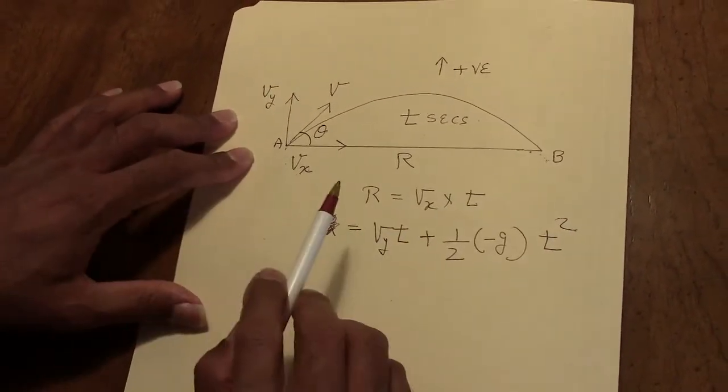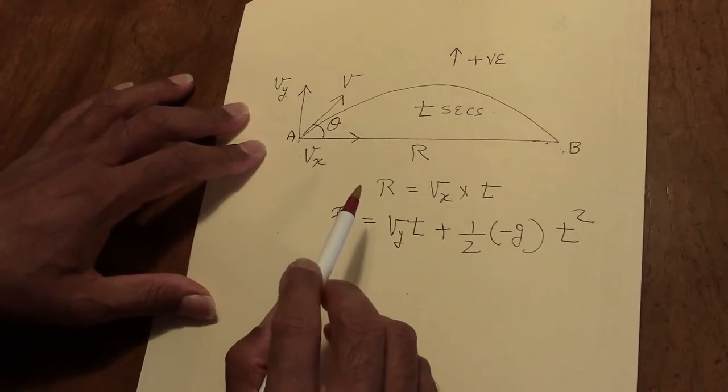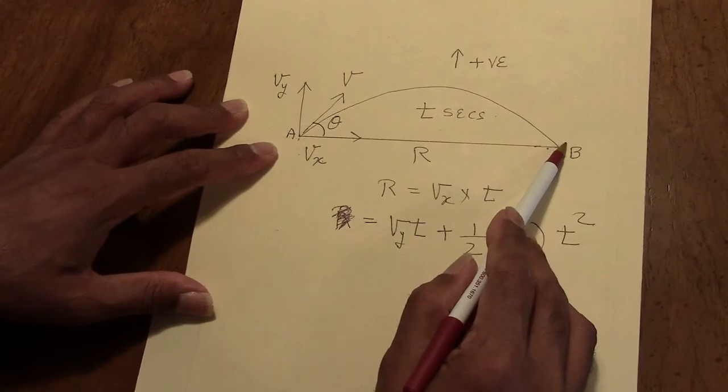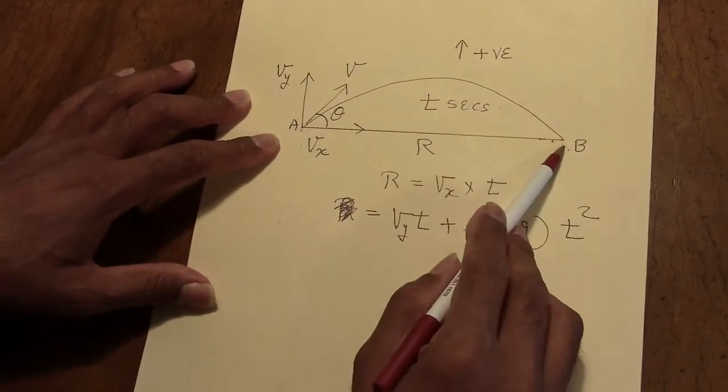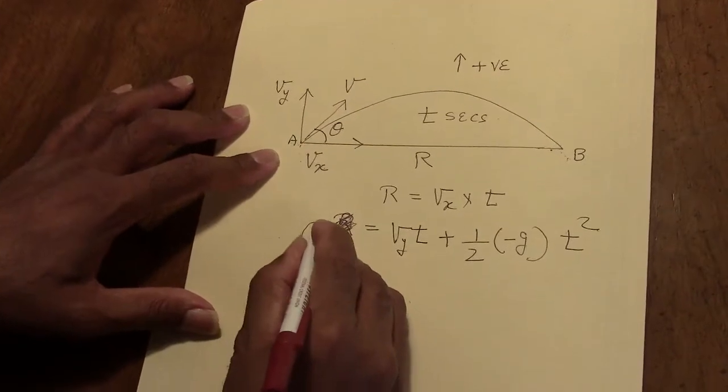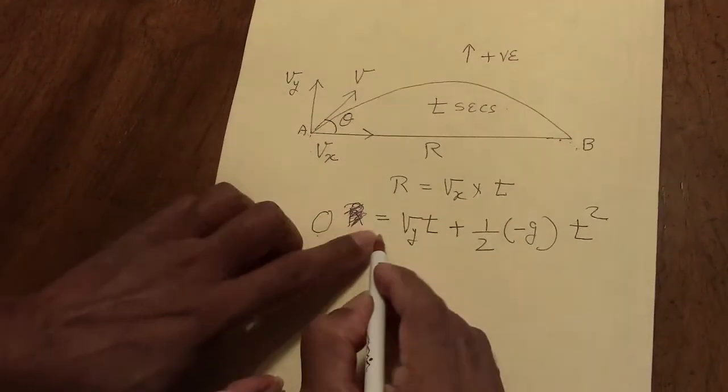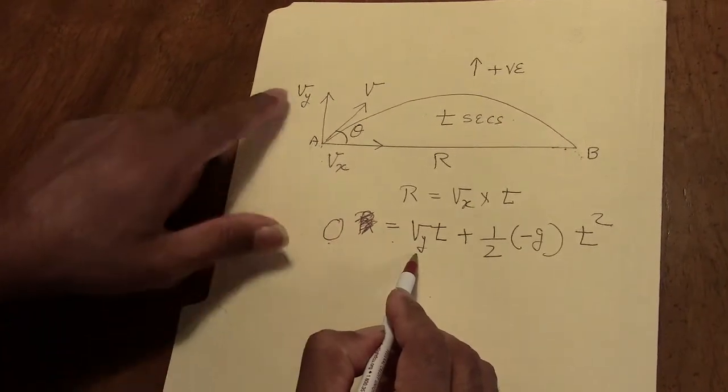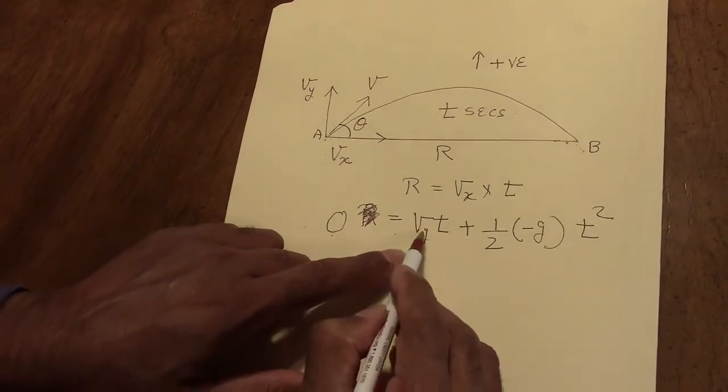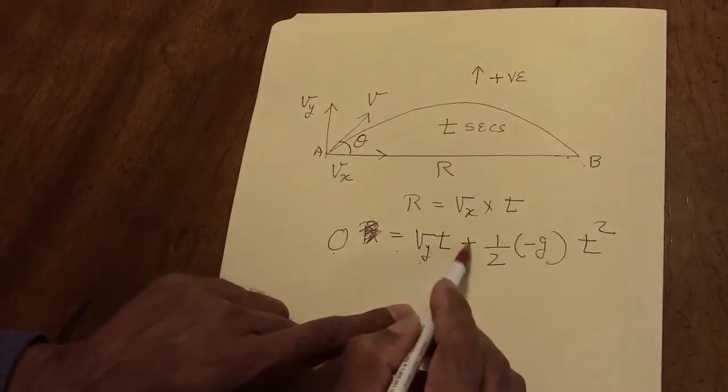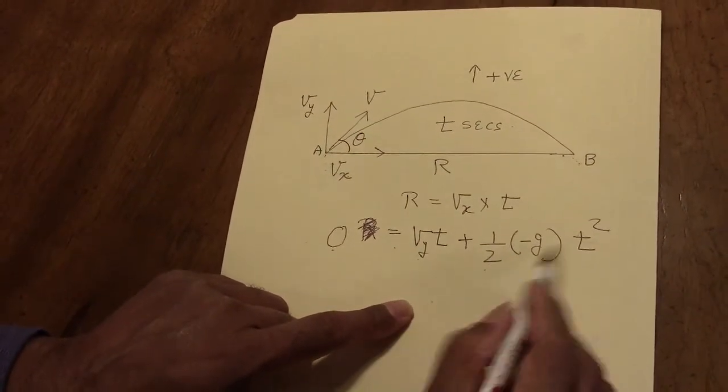Now let's consider the motion in the vertical direction. At B, the displacement is zero because the projectile is back to the ground. We know this familiar equation: the displacement equals the original velocity in the upward direction, which is Vy, times the time, plus half gt squared.